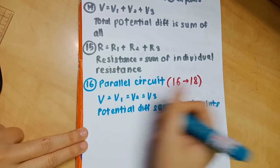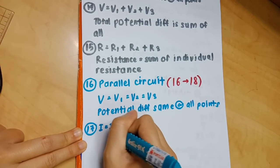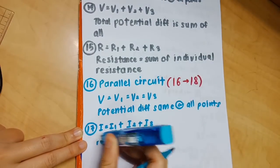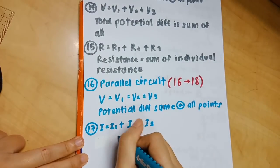Number 17: I equals I1 plus I2 plus I3. The current is the sum of all the currents in the circuit.